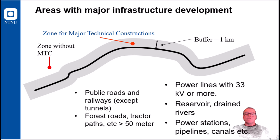And the dataset is basically generated based on buffering. So they collect data on public roads and railways, forest roads, tractor paths, etc., if they are longer than 50 meters, power lines, reservoirs, etc. Many layers of infrastructure development.